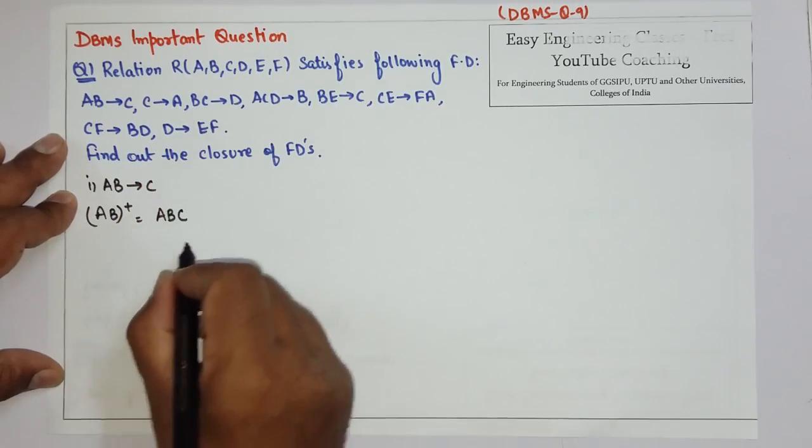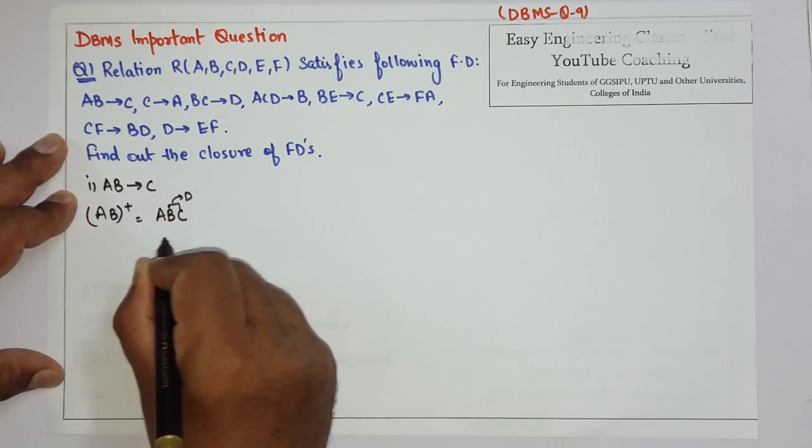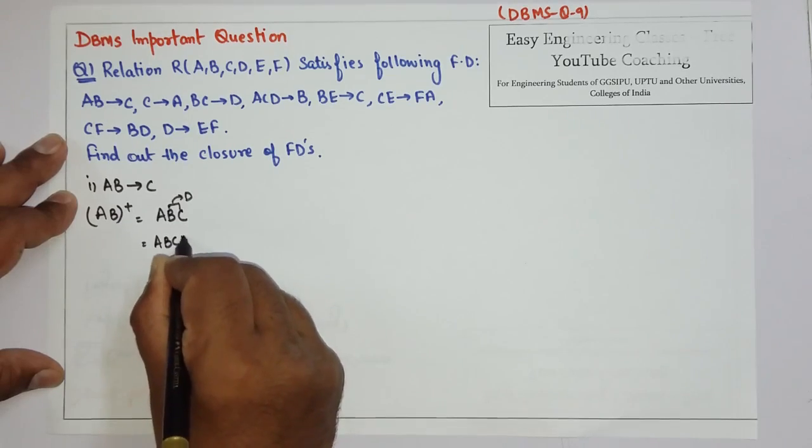From BC I can get D. So from BC I can get D. So right here, A, B, C, D.